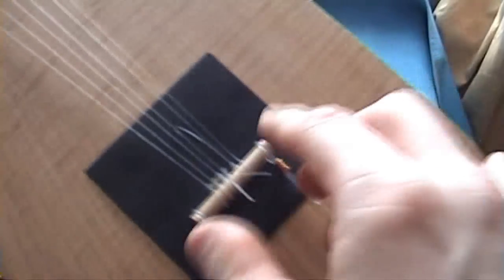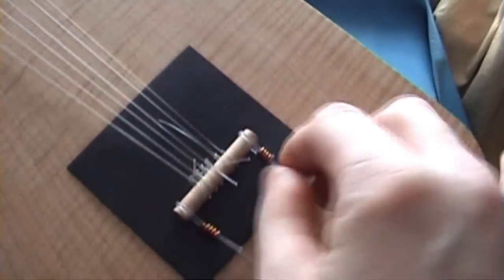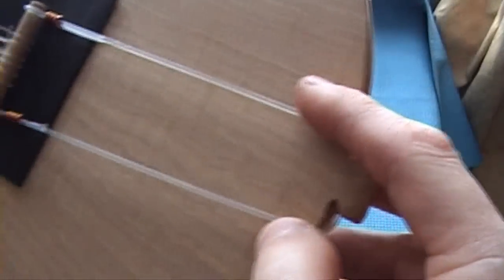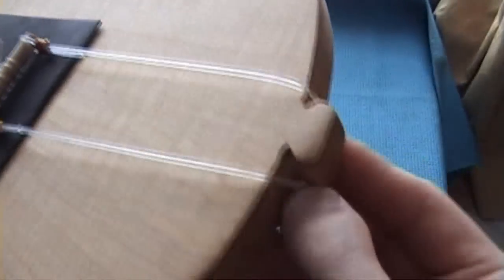So all the strings are on now. I haven't trimmed the ends, these loose ends just yet, but I'll do that later. And just look at the end here. You can see how, even though I've put the strings on light tension, it hasn't pulled the tailpiece over yet.